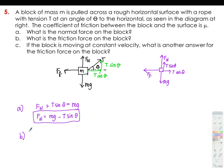Letter B: what is the force of friction of the block? We can use the equation: F of F equals mu times F of N, where F of N is mg minus T sine theta. So your force of friction is mu times (mg minus T sine theta).